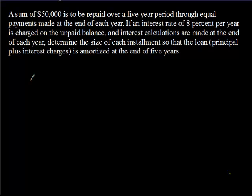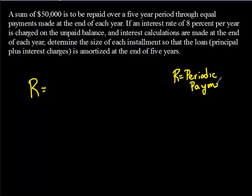In this case, instead of looking at an annuity, we're looking at amortization where we're trying to figure out how much the payments are going to be. To do this, we have to use a formula. R, which is our monthly or yearly payment, is known as the periodic payment. That's what we're finding with this formula because we have R equals a big fraction.